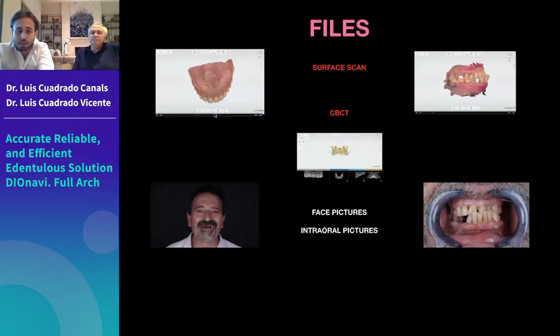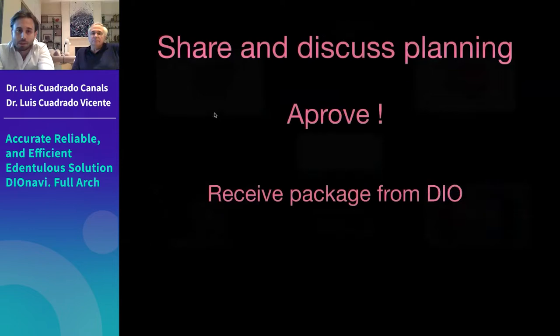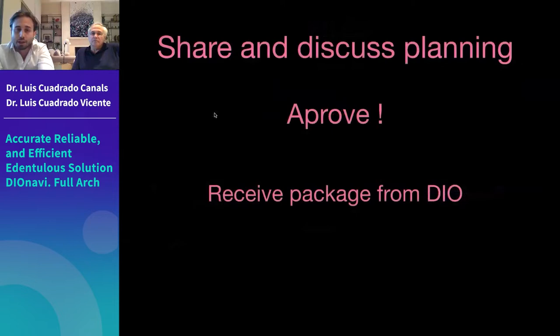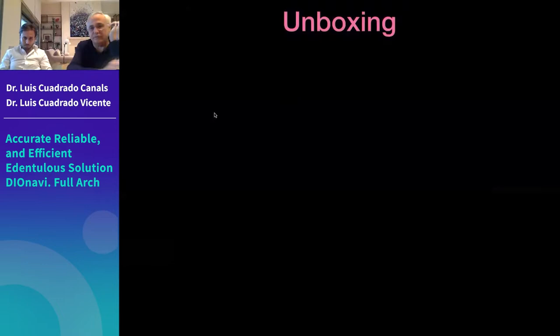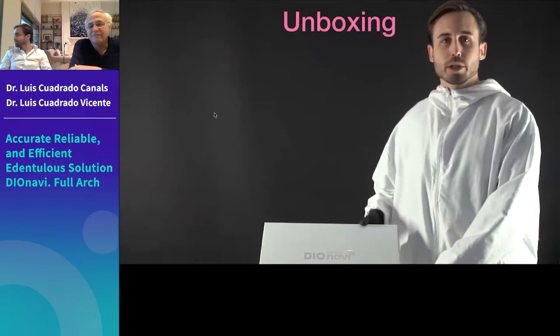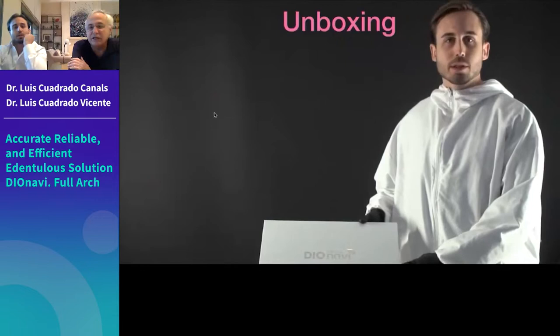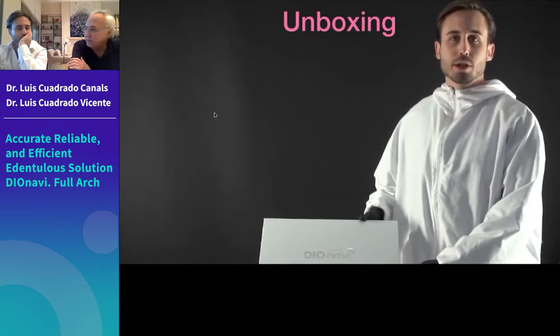For the CBCT, it's important to separate the lip from the gum so there is no ambiguity for DIO planners in differentiating gum from lip. After sending all files, you discuss and approve the planning with DIO planners, then receive the full package. A video demonstrates the unboxing of a full arch box and its contents.